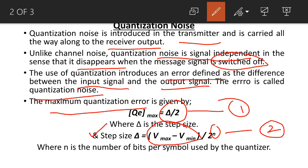But dynamic range option is not available in PCM, so we have to increase n. If n increases, then step size delta decreases, and so that quantization error QE also decreases.